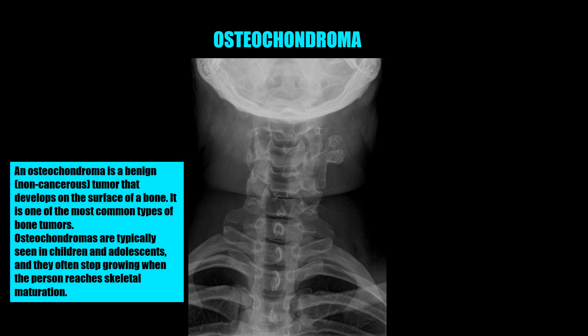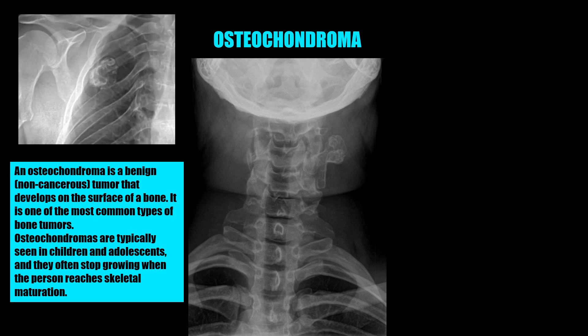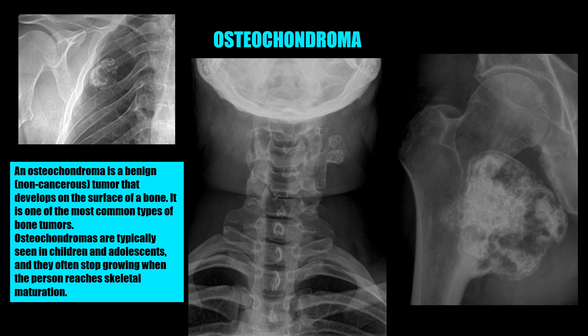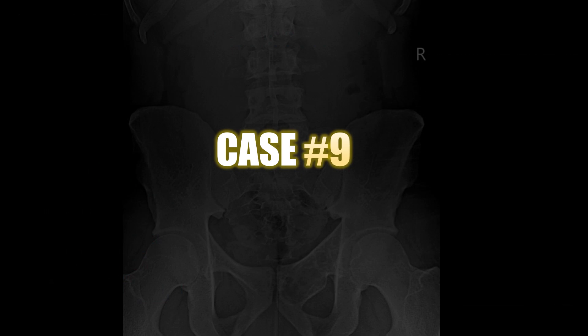Case number eight is a pedunculated osteochondroma arising from the transverse process. An osteochondroma is a benign tumor that develops on the surface of a bone and is one of the most common types of bone tumors. Osteochondromas are typically seen in children and adolescents and they often stop growing when the person reaches skeletal maturation.